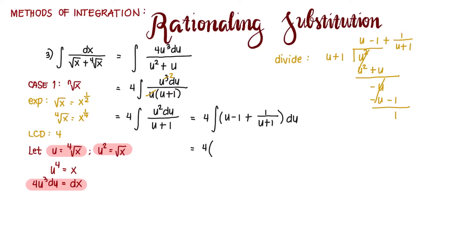Integrating, we have u squared over 2 minus u plus ln of u plus 1 plus c. Distributing 4, we have 2u squared minus 4u plus 4ln of u plus 1 plus c.